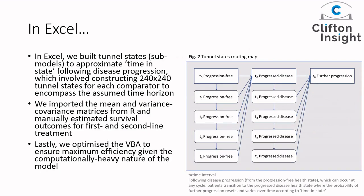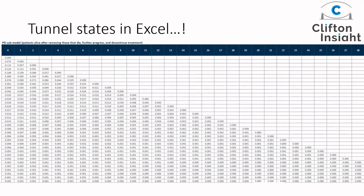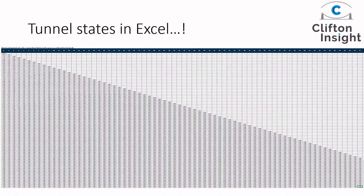In Excel we had to do things a little differently. We had to build tunnel states because we're approximating time in state — so it's not quite a continuous-time model. To do this, we constructed 240-by-240 tunnel states for each comparator to reflect the 20-year time horizon and monthly cycle length, as depicted in the tunnel state maps. Following disease progression, patients transition to progressed disease where the probability of further progression resets and changes over time. Tunnel states in Excel can quickly become cumbersome, unwieldy, and opaque.